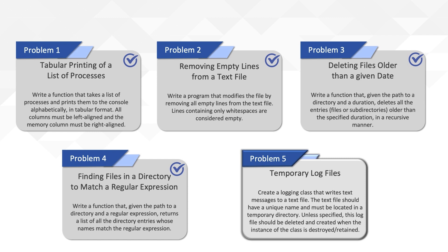In order to create unique names for the file, you could use a UUID, also known as a GUID. The C++ standard does not support any functionality related to that, but there are third-party libraries such as Boost UUID, Cross GUID, or STD UUID. For this implementation, we will use STD UUID.